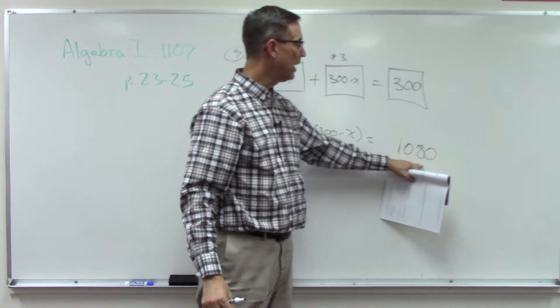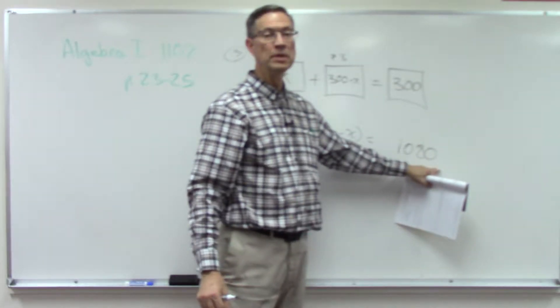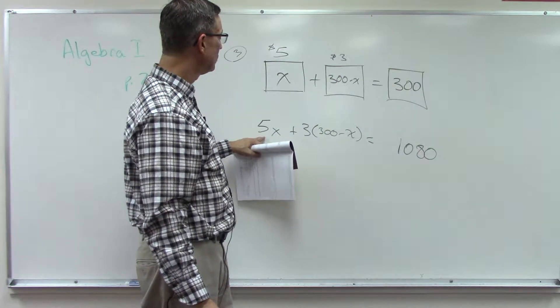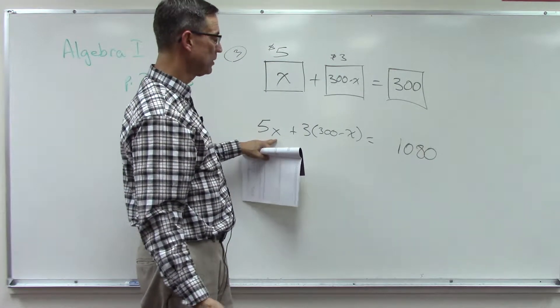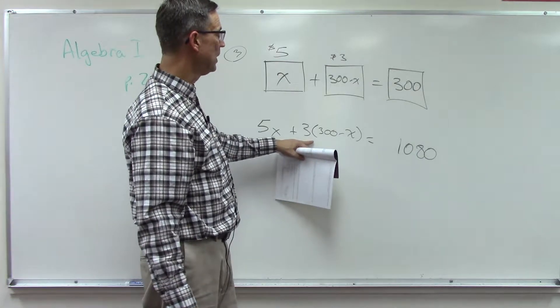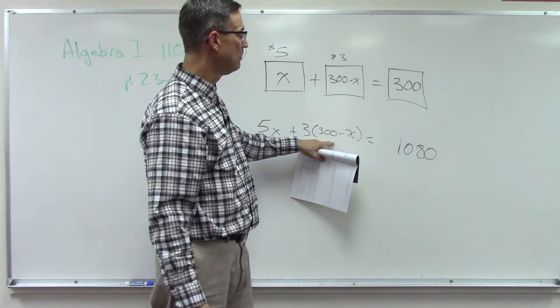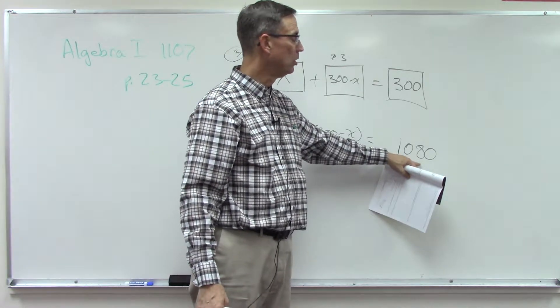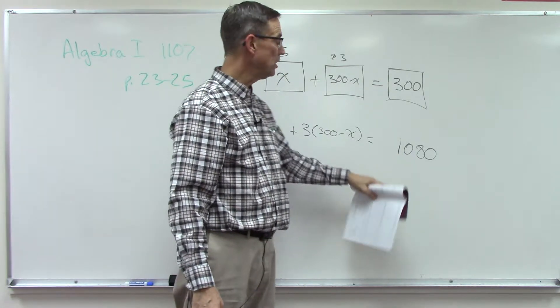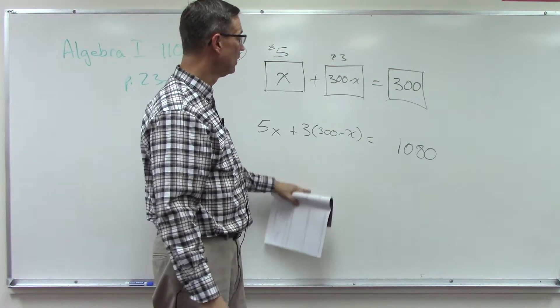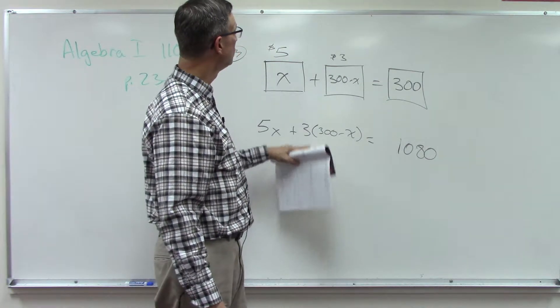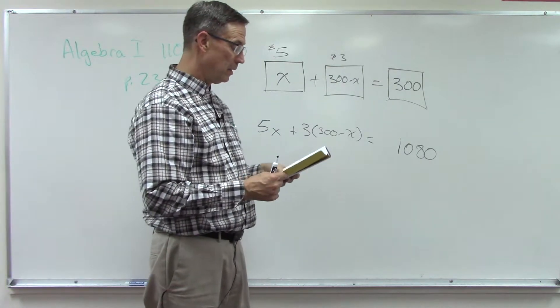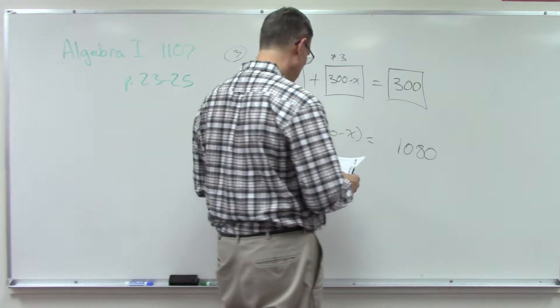So five dollars per ticket times x number of tickets, three dollars per ticket times the remainder of the tickets, and that will give you the total 1080 dollars. From there you can solve and get x. Once you know x, then you can plug in and figure out how many of each. Check your work then.